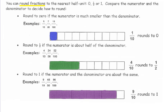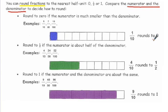You can also round fractions to the nearest half unit: to 0, half, or 1. What you need to do is compare the numerator and the denominator. Round to 0 if the numerator is much smaller than the denominator — like 1 out of 10, 7 out of 50, or 11 out of 100 would round to 0.